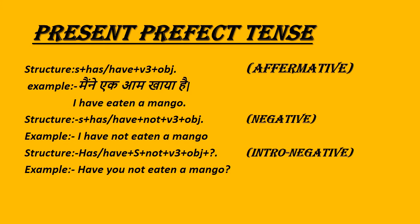The negative structure is: Subject + has/have + not + V3 + Object. Example: I have not eaten a mango. For the interrogative-negative, the structure is: has/have + Subject + not + V3 + Object + question mark.